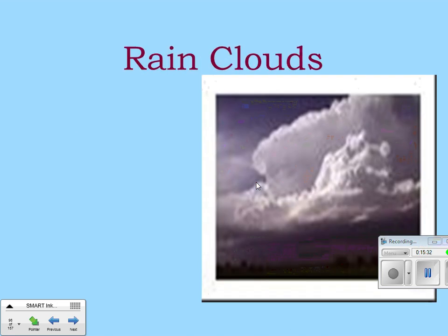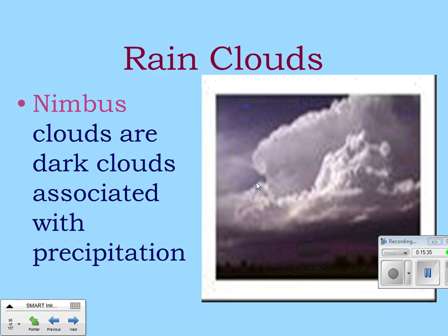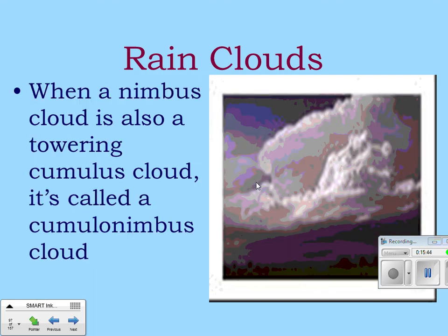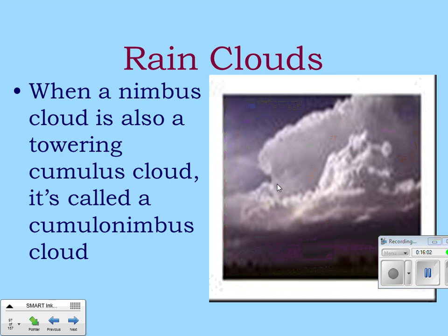Nimbus clouds are dark clouds associated with precipitation. When a nimbus cloud is a towering cumulus cloud, it's called a cumulonimbus cloud — white and puffy but also very dark. Nimbus indicates storm, cumulo indicates the white puffy shape. These are the thunderstorm clouds. Make sure you know that cumulonimbus means thunderstorm cloud.